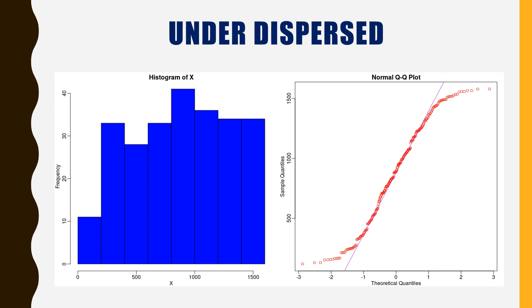Under dispersed and over dispersed. If the values are less deviated from the straight line, the graph is under dispersed. And if the values are more deviated from the straight line, the graph is over dispersed.